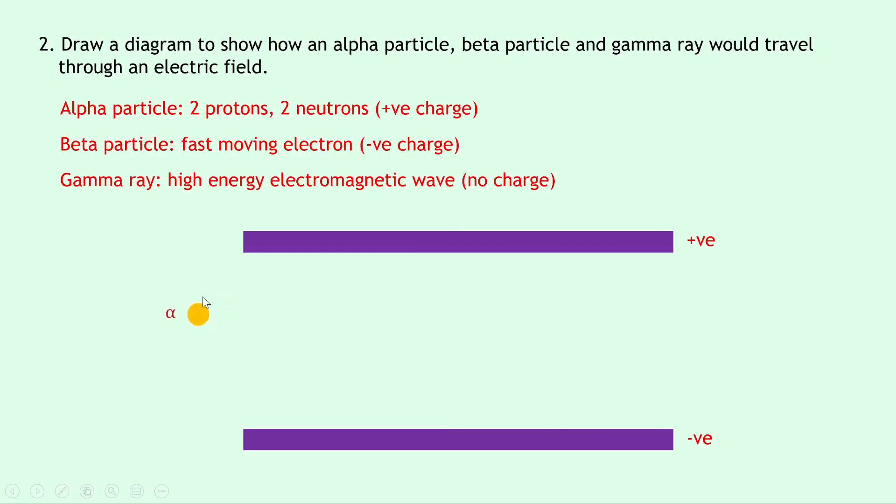If we start with the alpha particle which is this orange blob here then we need to show what happens to it as it passes between these two oppositely charged parallel plates in the electric field. Because the alpha particle is positively charged then as it moves through here it's going to be repelled away from the positive charge and attracted towards the negatively charged plate. So it's going to move down the way like this.